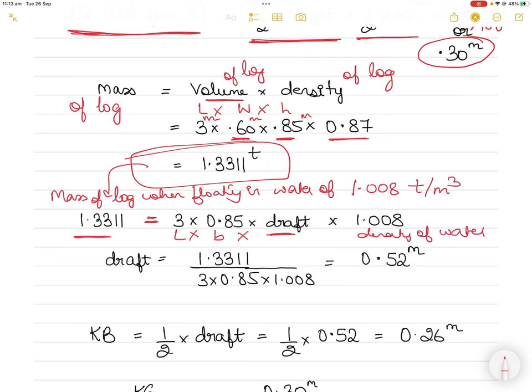I take the log and float it in water. It will displace a certain amount of water. Length by breadth by draft multiplied by density of water. To find the draft, divide the mass by these values. Transpose all the knowns to one side. Divide 1.3311 by 3 multiplied by 0.85 multiplied by 1.008, and you will get the draft as 0.52 of a meter.